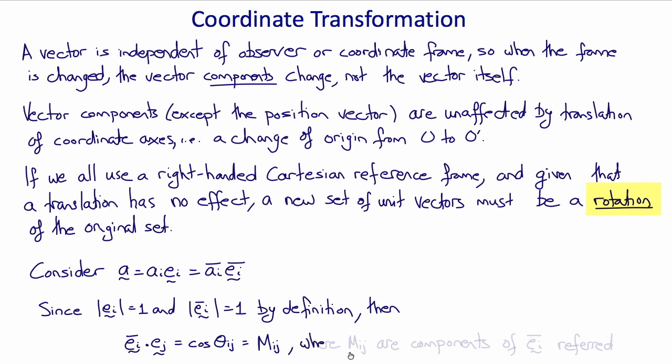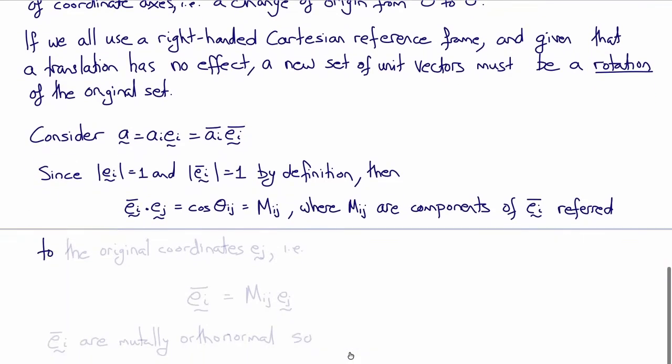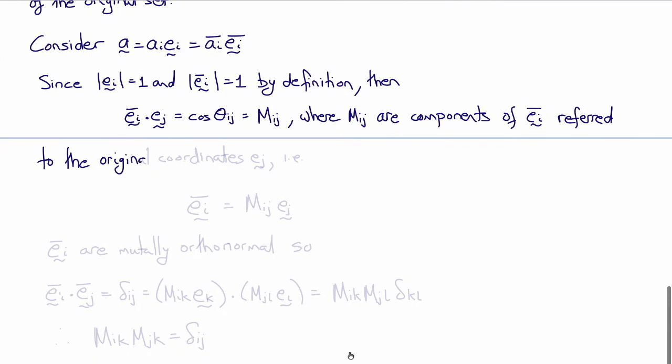You can think of the components of that matrix as the components of the new unit vectors ei bar referred to the original coordinates ej. In other words, we can write that ei bar, the new unit vectors, have components mij with respect to ej.